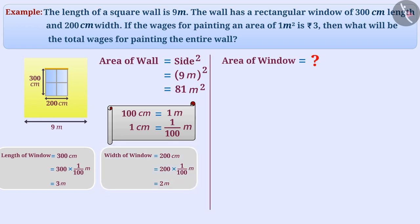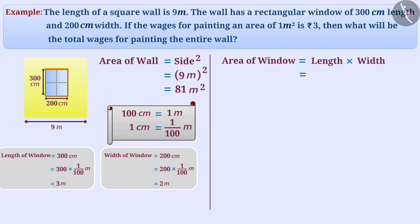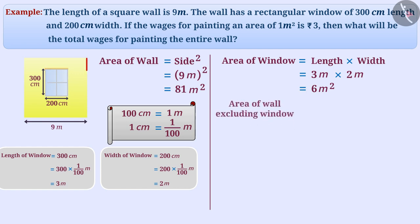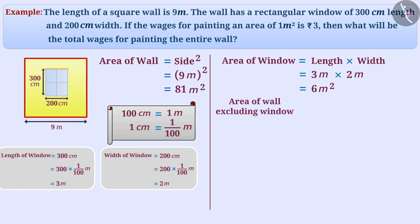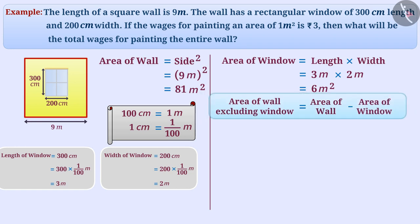Therefore, the area of the rectangular window is length multiplied by width, equal to 3 meters multiplied by 2 meters, which is equal to 6 square meters. Now, the area of the wall excluding the window will be area of the wall minus area of the window, equal to 81 square meters minus 6 square meters, which is equal to 75 square meters.